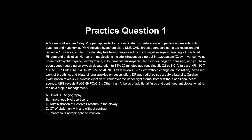Reading the full question: past medical history includes hypothyroidism, SLE, CAD, breast adenocarcinoma status post resection and radiation 10 years ago. Hospital stay complicated by gram-negative sepsis requiring two liters of lactated Ringers and antibiotics. Current medications include IV piperacillin-tazobactam, erzosin, vancomycin, home hydroxychloroquine, levothyroxine, and subcutaneous enoxaparin. Dyspnea began one hour ago; oxygen desaturation to 85% requiring two liters nasal cannula. Vitals: HR 110, temp 100.5, BP 110/80, RR 24, SpO2 82% on four liters nasal cannula. Exam: JVP 7 cm, increased work of breathing, bilateral lung crackles. ABG: PaO2 59, PCO2 51. What is the next best step in management?